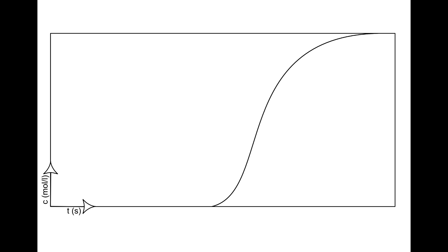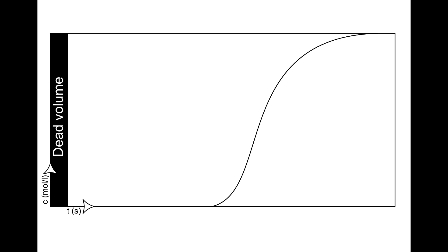To determine the capacity of the column, we first need to know the dead volume. Dead volume is tubes or pipes that the feed needs to be transported through before reaching the actual adsorbent in the column. Often this part of the graph is simply taken away and not shown in the breakthrough curve diagram.